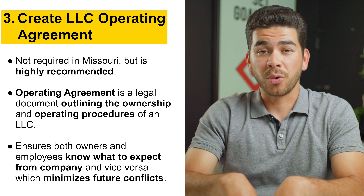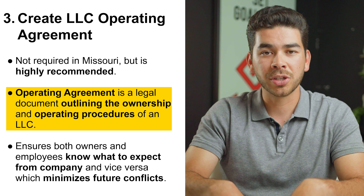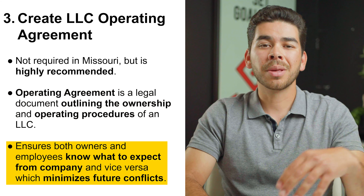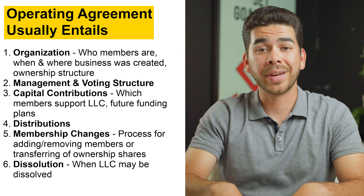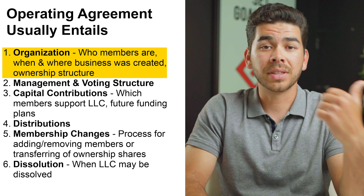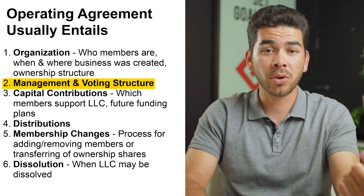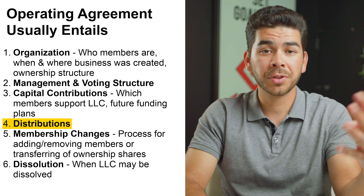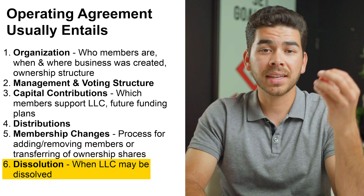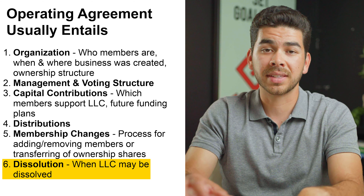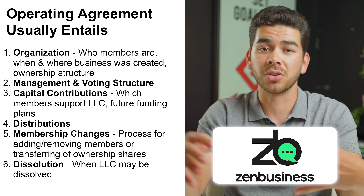Step three is to create an operating agreement. This is not required in Missouri, but it is highly recommended. An operating agreement is a legal document outlining the ownership and operational procedures of an LLC, ensuring owners and employees know expectations so there's no future conflict. It typically covers: organization, management and voting structure, capital contributions, distributions, membership changes — such as adding or removing members or transferring ownership — and dissolution in the event your LLC has to be dissolved. This is complicated, so we recommend using a company like Zen Business.